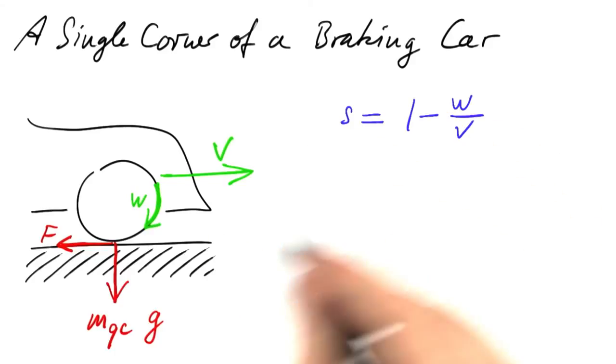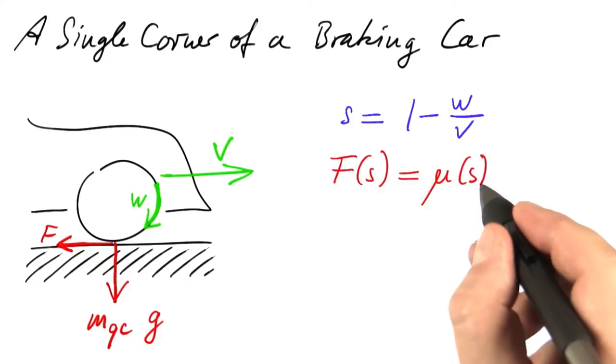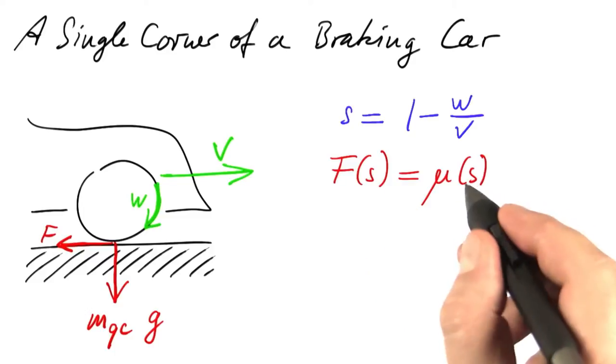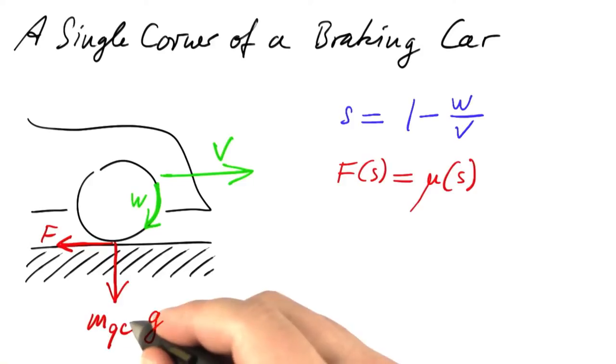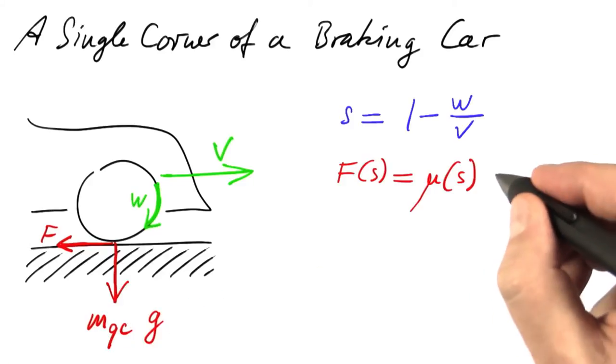Once we've got the wheel slip, we can compute the force from friction. And it's the coefficient of friction, which again depends on the wheel slip, times the force perpendicular to that surface. One quarter the mass of the car times gravitational acceleration.